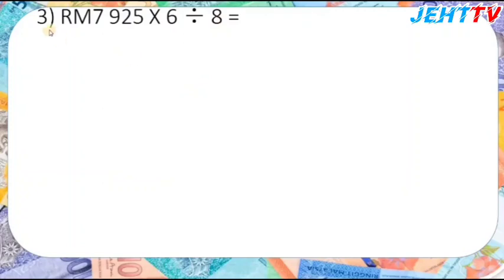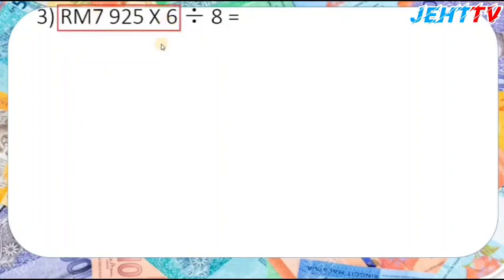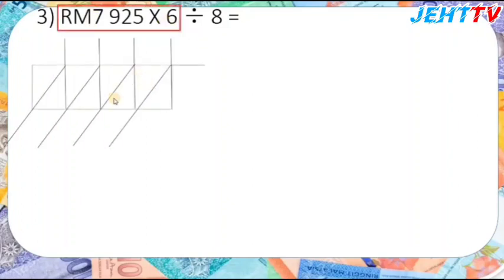The next question, number 3: RM7,925 multiplied by 6, divided by 8, equals to? First, we calculate from left to right, so we need to do the multiplication first: 7,925 multiplied by 6.